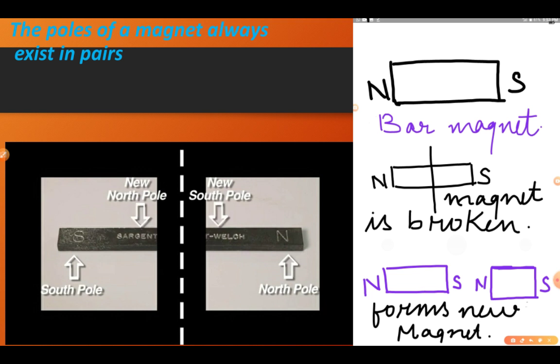The poles of a magnet always exist in pairs. If you take a bar magnet having a north pole and south pole and cut it into two pieces, the place from where you cut it will again become a new pole. The first piece will again have a south pole and a north pole, and so will the second. We are not able to separate the poles, that's why we say poles always exist in pairs.